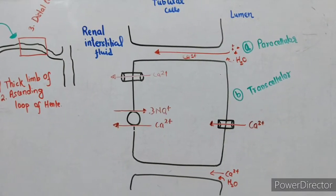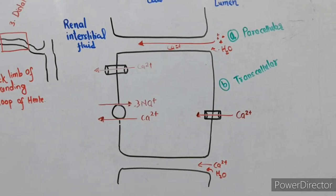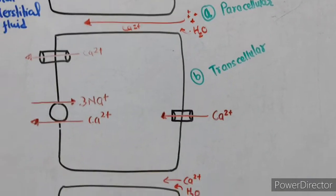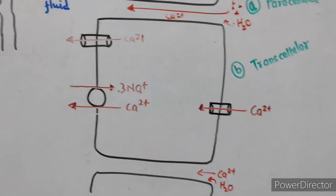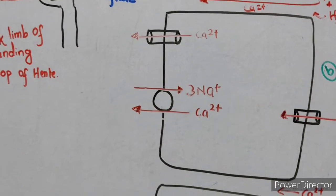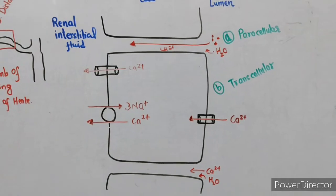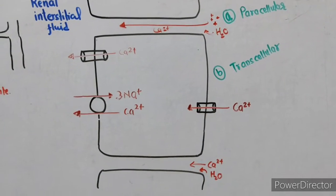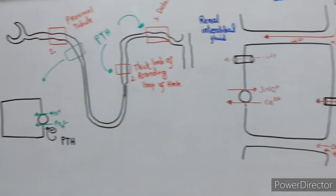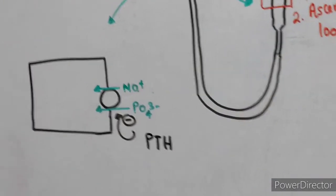Parathyroid hormone affects calcium reabsorption only in the ascending loop of Henle and the distal tubule, mainly through the transcellular pathway — it does not stimulate the paracellular pathway. PTH activates calcium ATPase and the sodium-calcium antiporter on the basolateral membrane. In the distal tubule, there is no paracellular pathway of calcium reabsorption — only the transcellular pathway exists there.